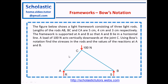This is a framework. The figure below shows a light framework consisting of three light rods — we assume the rods do not have any weight. The lengths of rods AB, BC, and CA are 5 cm, 4 cm, and 3 cm respectively. The framework is supported at A and B so that A and B lie in a horizontal line. A load of 100 Newtons acts vertically downwards at point C. Using Bow's notation, find the stresses in the rods and the reactions at A and B. There are three rods and two reactions — altogether five variables to be found.